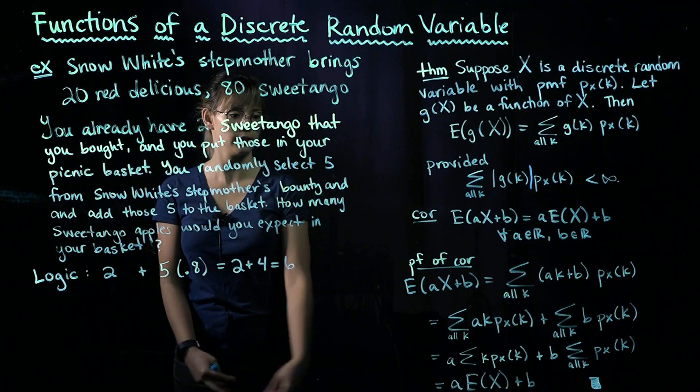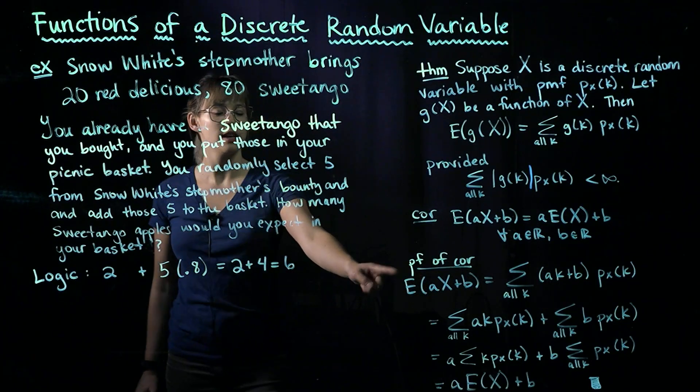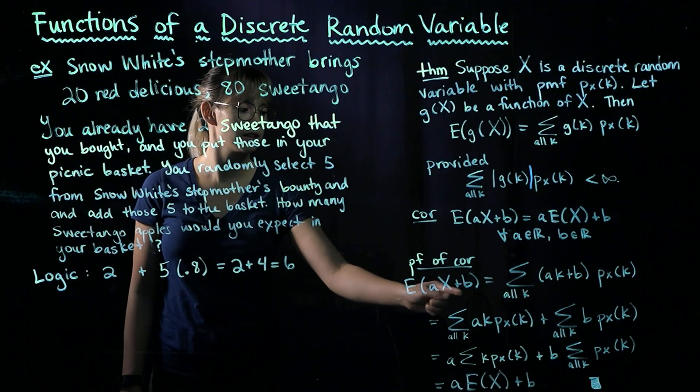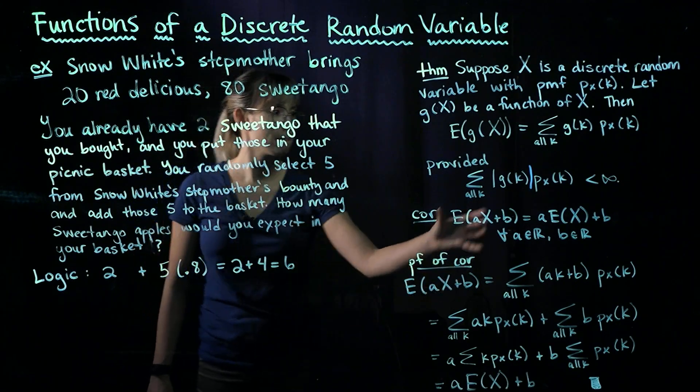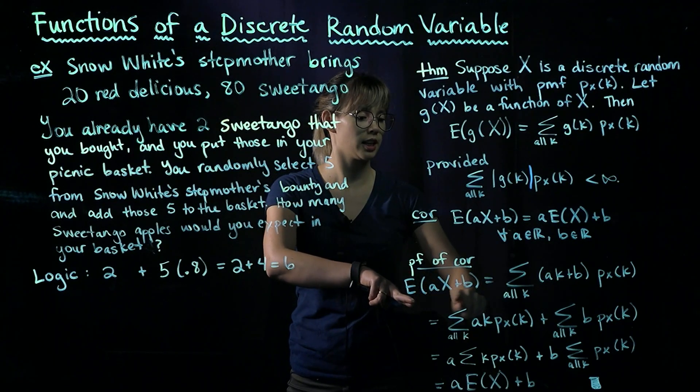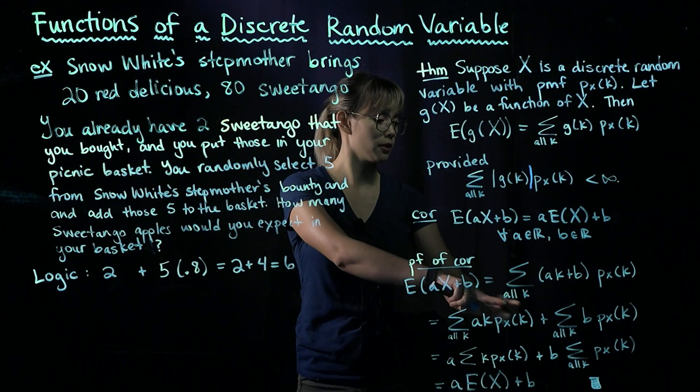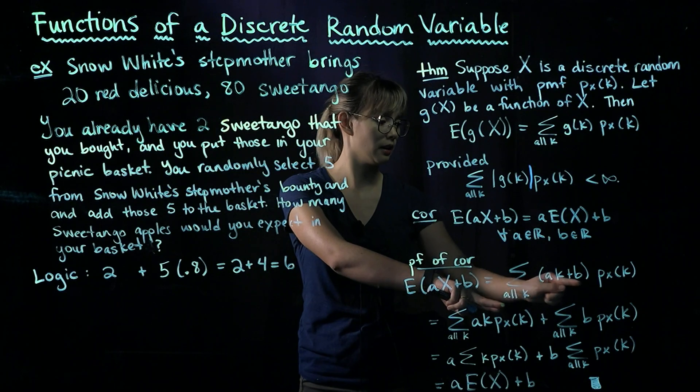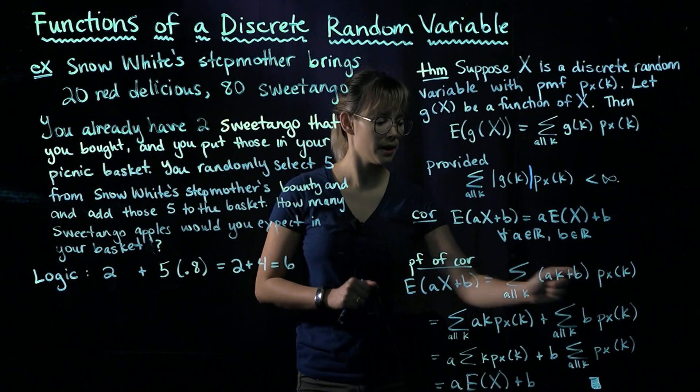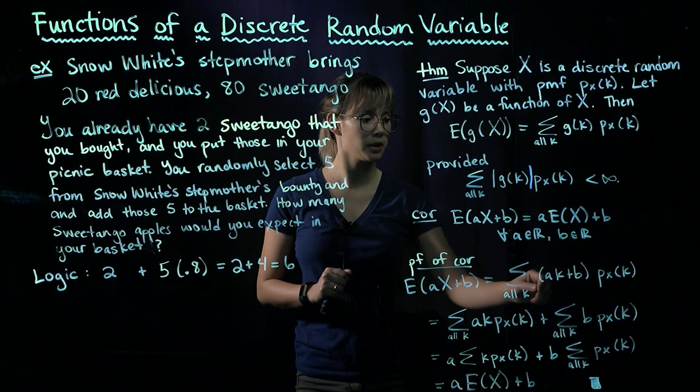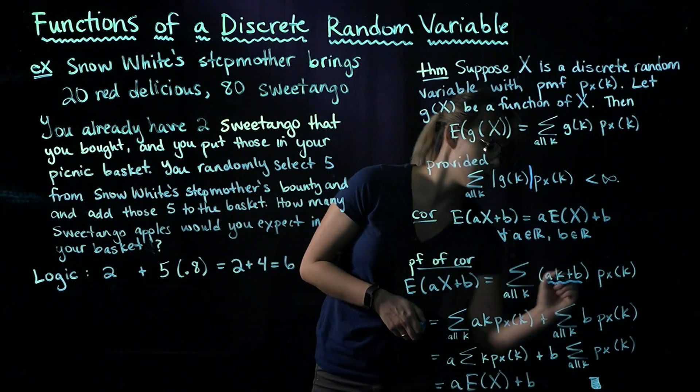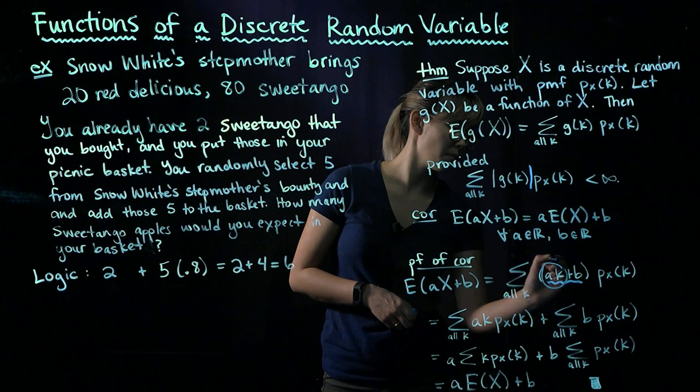Okay, so our proof is right here. We're going to start off with the expected value of aX + b. Now we're going to take this and use our theorem here. So what is this expectation equal to? We sum over all the k's, and we put in our function here, ak + b, and then we have our PMF. Now what we're going to do is split this piece up so that we'll have this in one sum and then this in another sum.